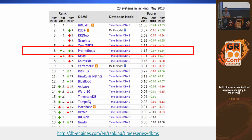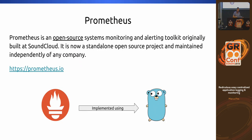InfluxDB and Prometheus differ a bit in scope. InfluxDB focuses on being a generic time series database and also does some monitoring. Prometheus came from the SoundCloud team — it's also a time series database but was created with a specific purpose: monitoring. The time series database is more of an implementation aspect in Prometheus, whereas in InfluxDB it's the primary focus. So the focus of those two products is a bit different.